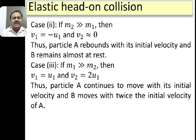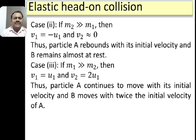Similarly, if we drop a ball on the ground, the ball will bounce back with almost the same velocity whereas the Earth remains stationary. Now considering the third case, where M1 is very large compared to M2 and substituting in equations 8 and 9, we get V1 = U1 and V2 = 2U1. That means particle A continues to move with its initial velocity whereas the smaller particle B moves with twice the initial velocity of A. These are the three special cases for elastic head-on collision.